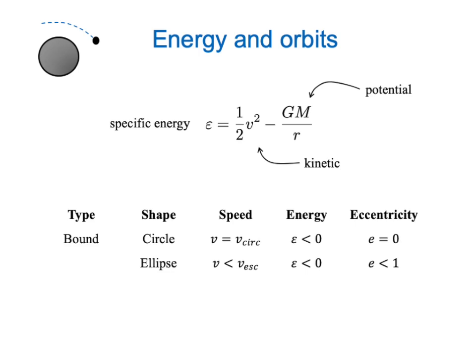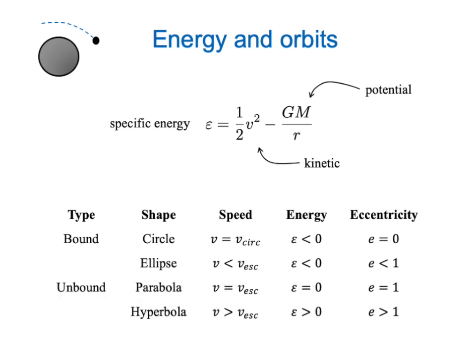If we have a bound orbit, it might be a circle or an ellipse. A circle has an energy less than zero and an eccentricity equal to zero, and an ellipse has an energy less than zero but an eccentricity between zero and one. In the case of a parabolic orbit, our net energy is equal to zero — we're moving at exactly the escape speed, and the eccentricity is one. A hyperbolic orbit has a speed greater than the escape speed, giving a total energy greater than zero and an eccentricity greater than one.